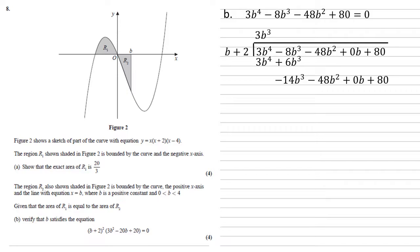How many times will our b go into minus 14b cubed? Well, it's minus 14b squared. Multiply that through by the b plus 2 and take it away. We end up with minus 20b squared plus 0b plus 80. How many b's go into that? It's minus 20b. Multiply that through. Take it away. We're left with 40b plus 80. Well, that's just 40 times b plus 2. No remainder.